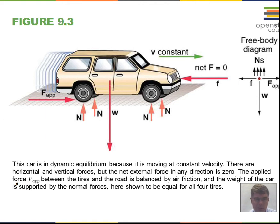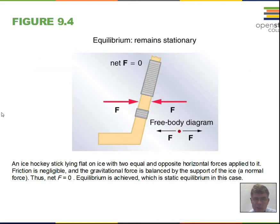We have equilibrium here: net force equals zero, net torque equal to zero. So here's a hockey stick. The two forces being applied here, equal number of newtons left and right, and we would have a net force equal to zero. Is that all we need to have equilibrium?